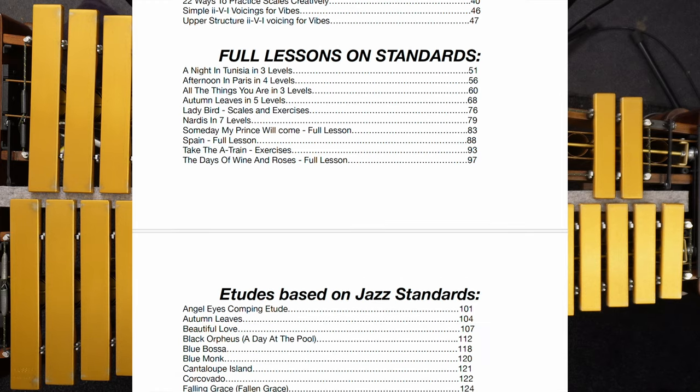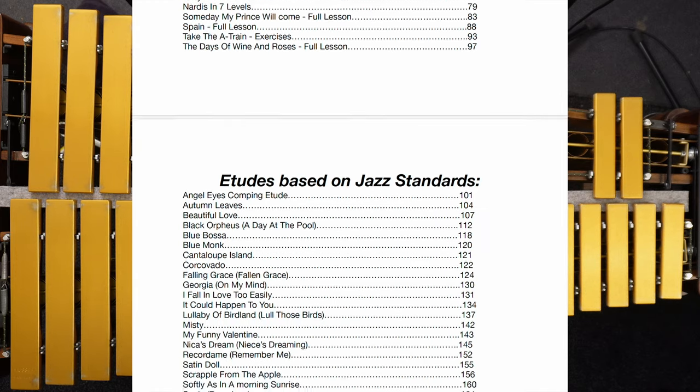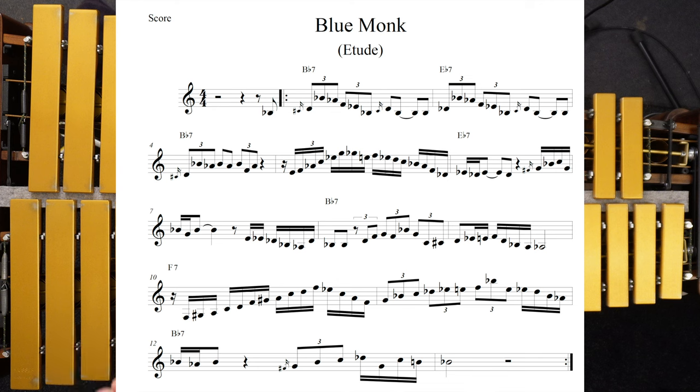This etude is based on Thelonious Monk's composition Blue Monk, which is a slow blues with a very simple form with a 5-4-1 structure in the key of Bb. I'll play the etude and then go back and break down each phrase so you can see how it relates to the chords. Here we go.